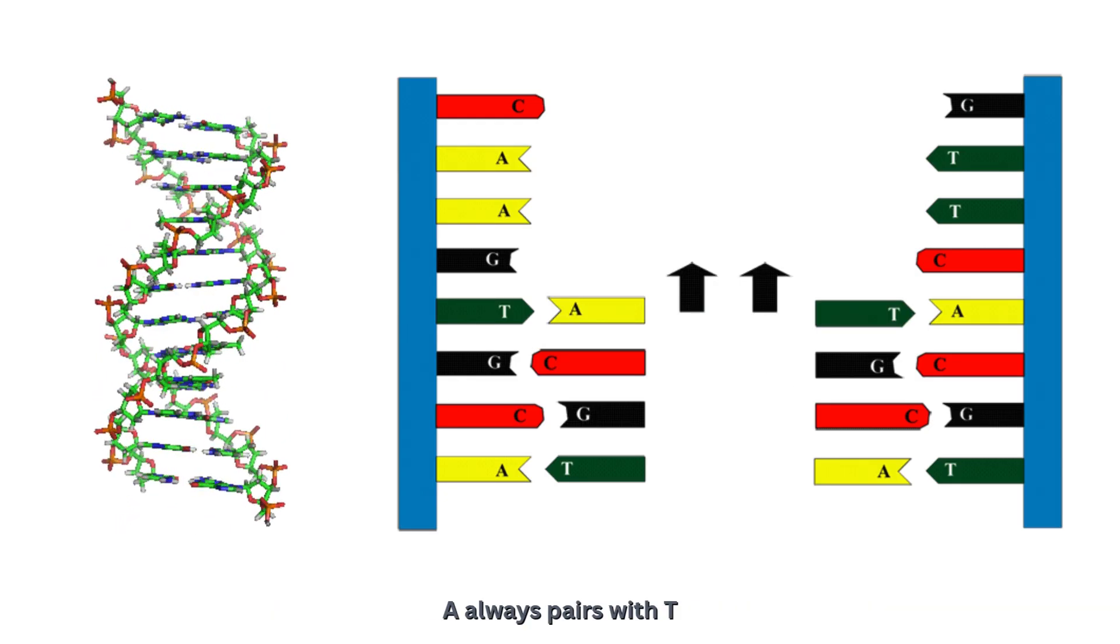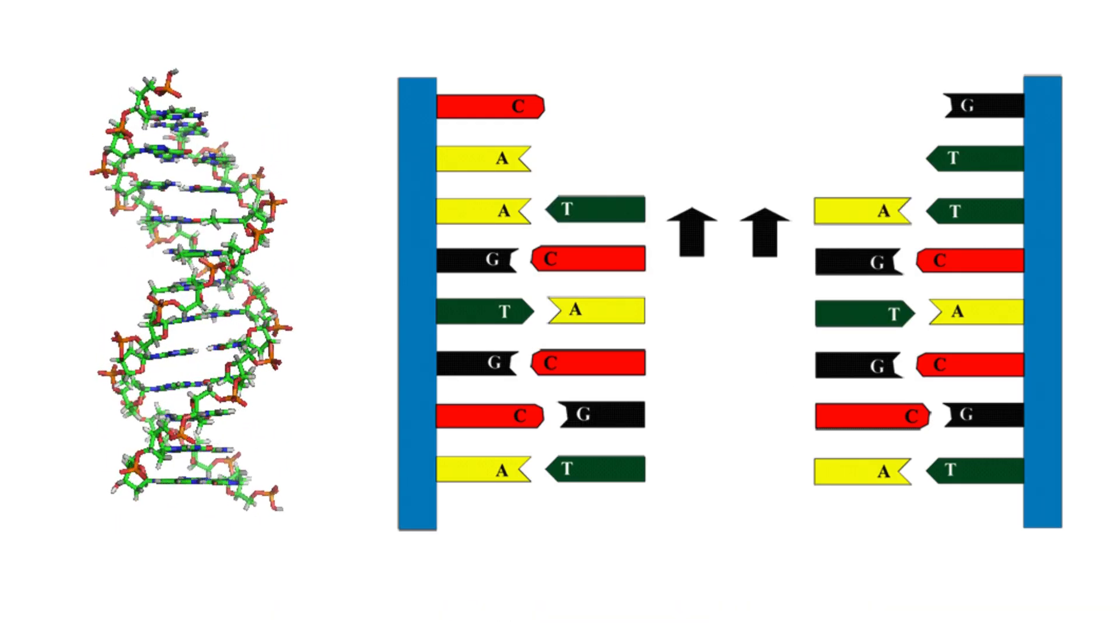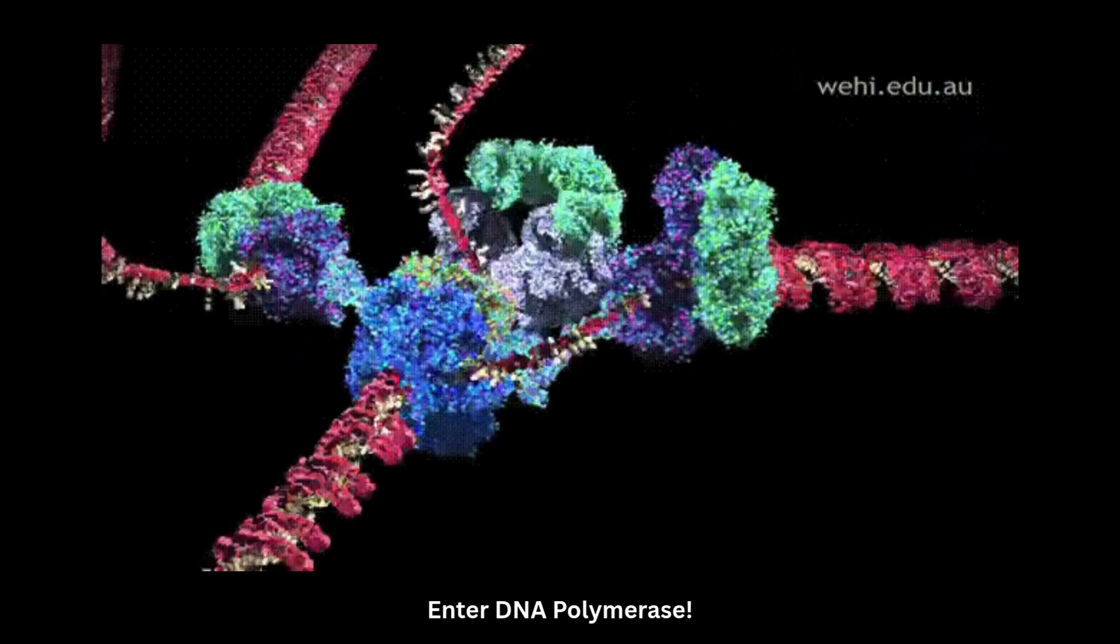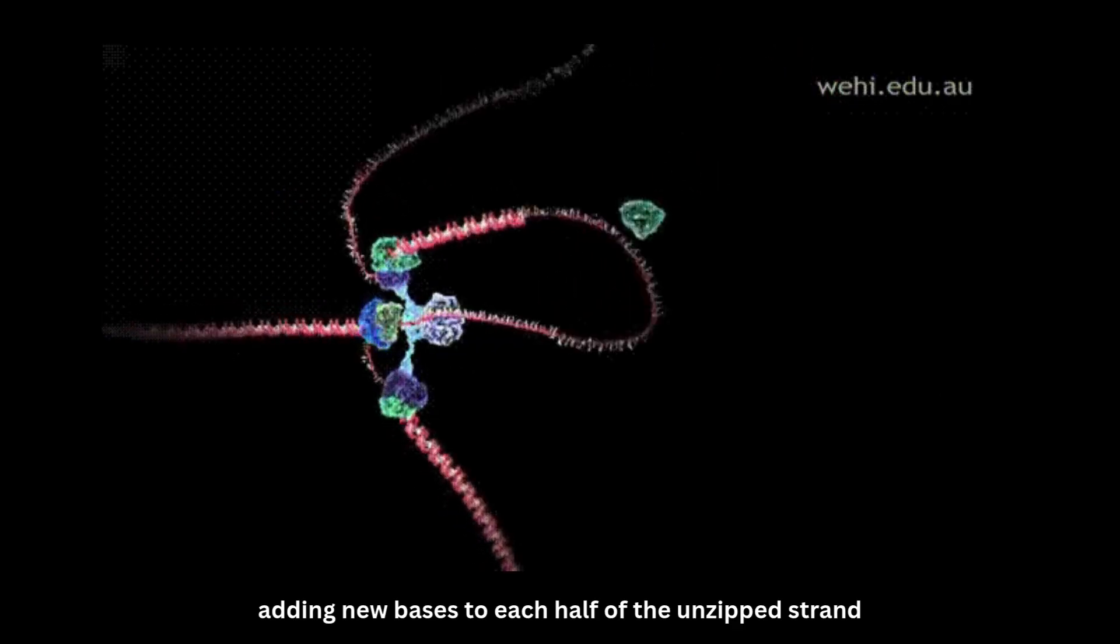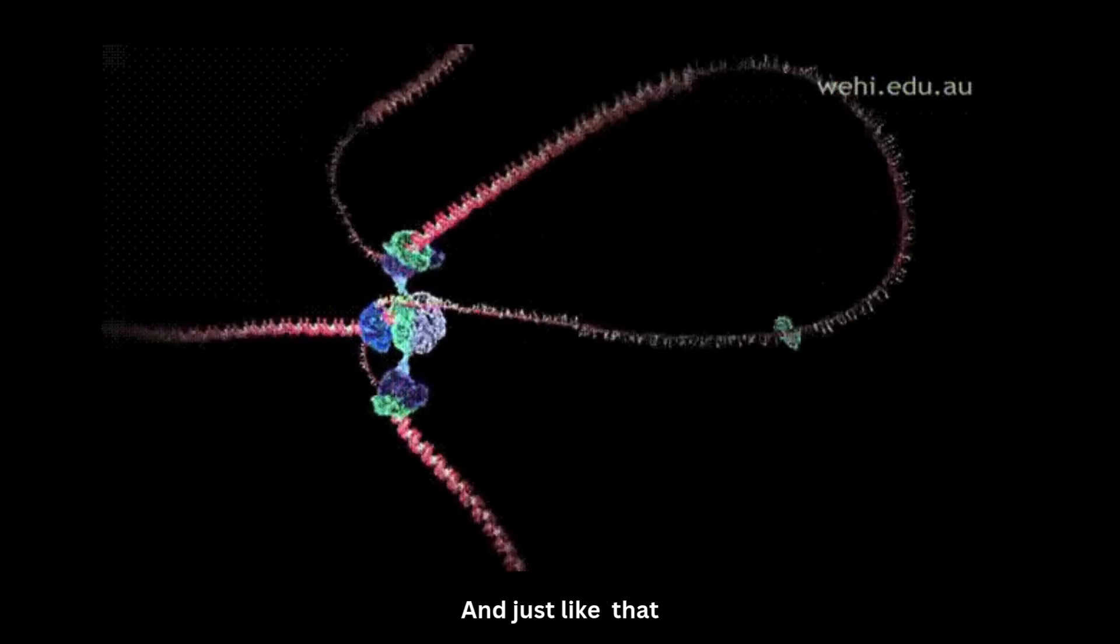Simple rule: A always pairs with T, and C always pairs with G. No cheating allowed! Enter DNA polymerase - this enzyme acts like a builder, adding new bases to each half of the unzipped strand. And just like that, two identical DNA strands are born.